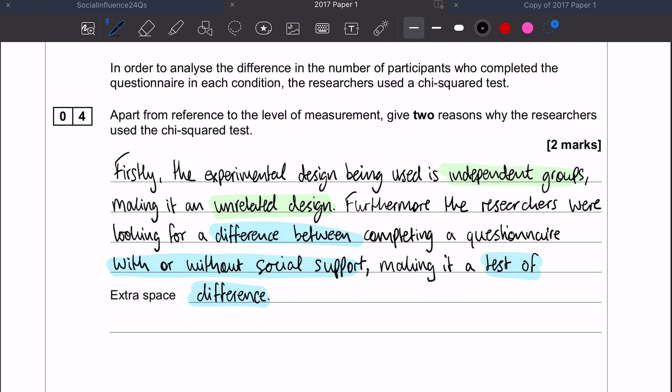The second reason why we use a chi-squared is because the researchers were looking for a difference between completing a questionnaire with or without social support, making it a test of difference. Like I said, you stay away from the nominal data part because the question says without referring to levels of measurement.